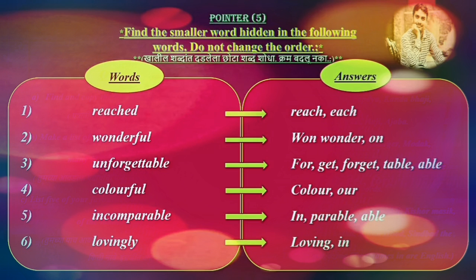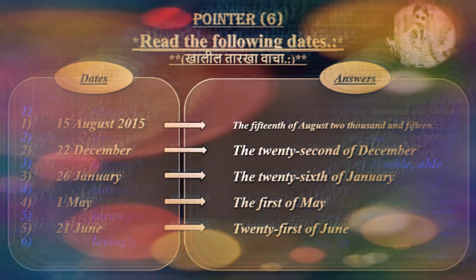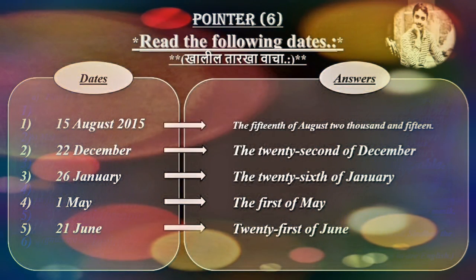Third word: unforgettable — hidden words: for, forget, table, able. Fourth word: colorful — hidden words: color, our. Fifth word: incomparable — hidden words: in, parable, able. Sixth word: lovingly — hidden words: loving, in.